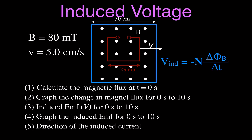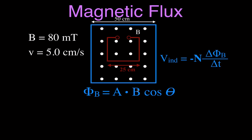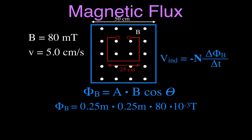First, we're going to calculate the magnetic flux at time zero — right now, before we've moved the coil. This is the equation: magnetic flux equals A, the area of the coil, times the magnetic field strength, times the cosine of theta. Theta is the angle between the coil and the magnetic field; those two things are at right angles — 90 degrees — and the cosine of 90 is 1, so we drop that term. The area of the coil is 25 centimeters by 25 centimeters, converted to meters, multiplied by the magnetic field strength of 50 milliteslas, which is 10 to the minus 3. Multiplying those values together, the magnetic flux at time zero is 5 times 10 to the minus 3 Webers.